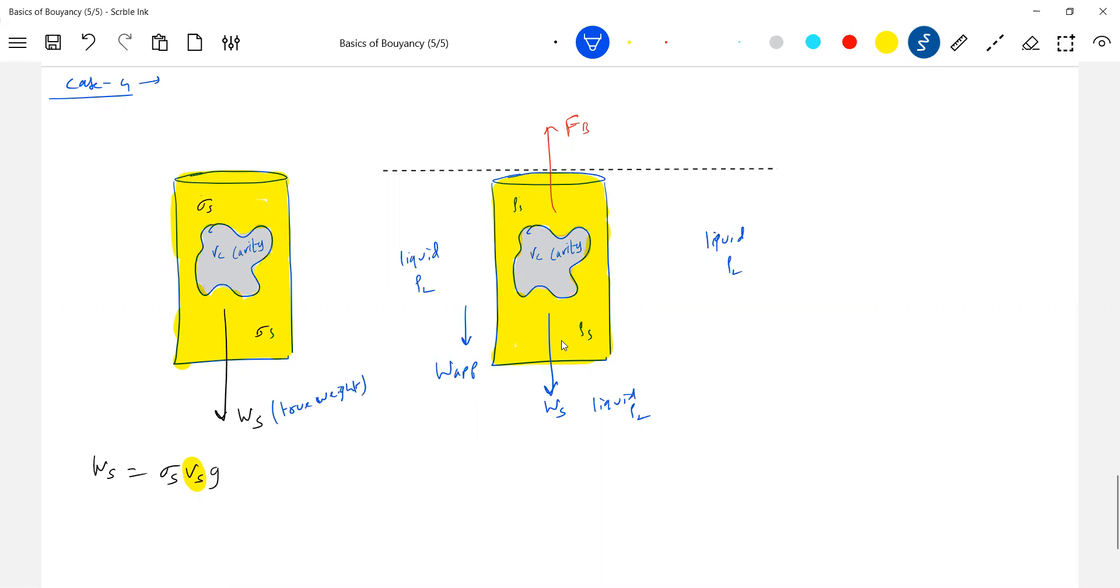Ws is a true weight, actual weight. This is apparently the measured thing. So what is the apparent weight? Apparent weight I can measure it very easily. Apparent weight you're going to write Ws minus Fb. Ws we know - sigma s Vs g.